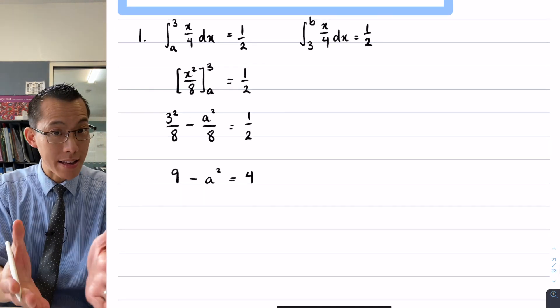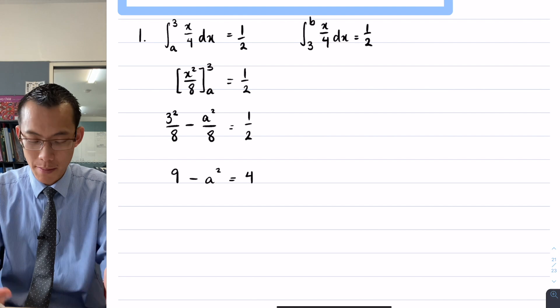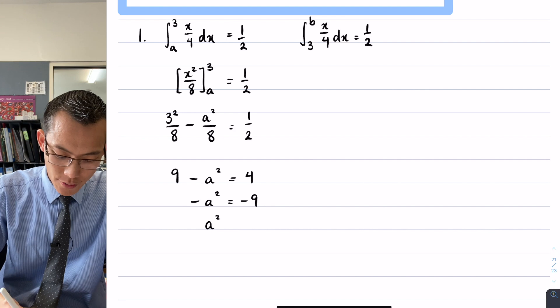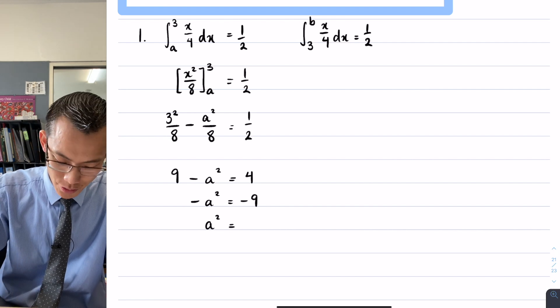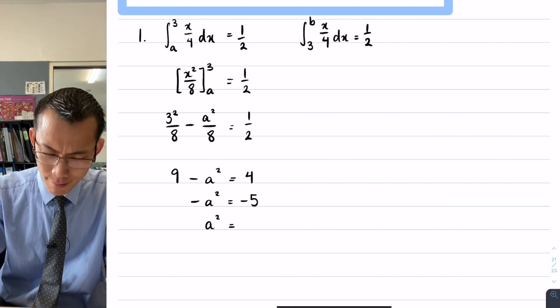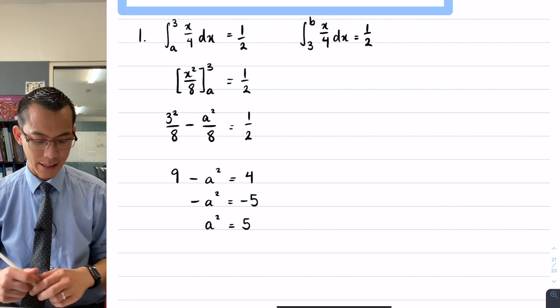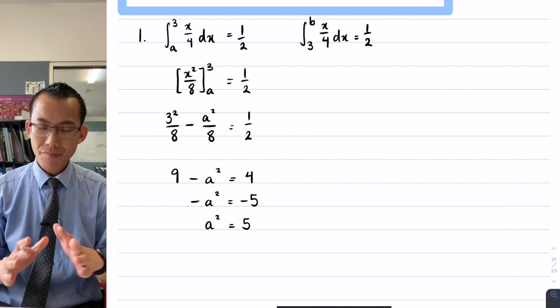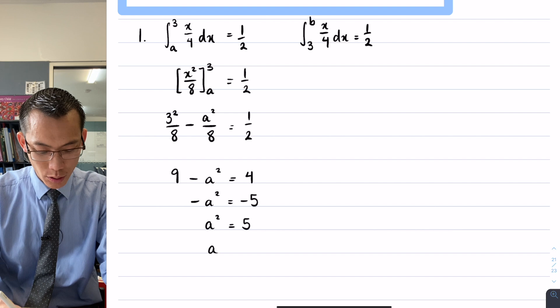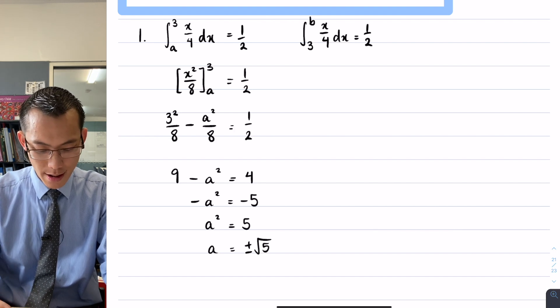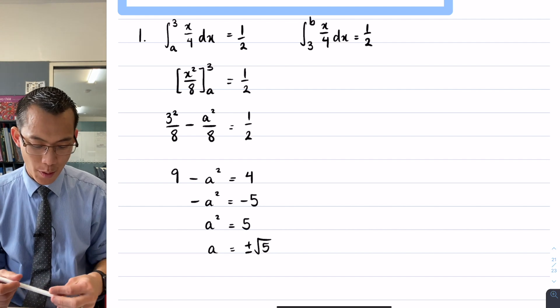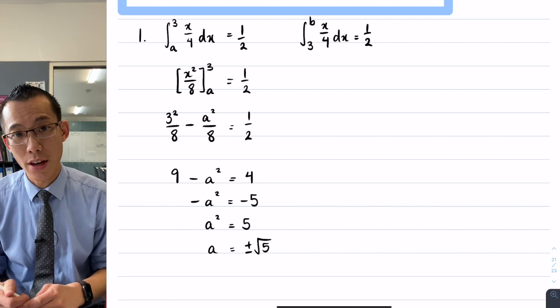So I now want to isolate my unknown a, so I'm going to make that the subject. I will subtract 9 from both sides. I said 9, but what I meant was 4 take away 9, which is negative 5. Double check that, and then I get rid of that negative—don't do two things at the same time. All right, now at this point I want to find what a is, so I take the square roots of both sides. But I notice that when you take the square root of both sides, you're going to get a positive and a negative result here.